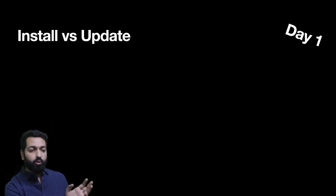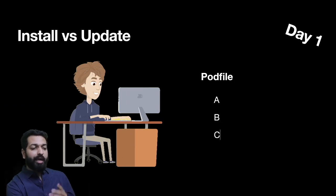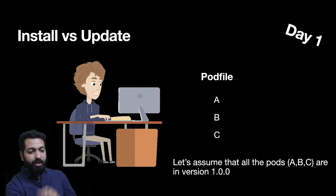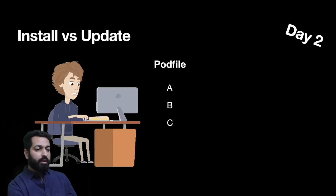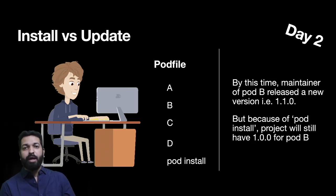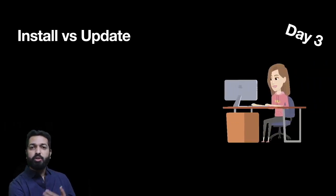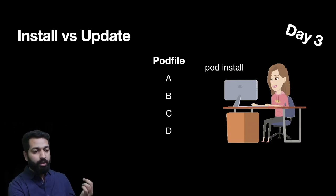Let's understand install versus update through an example. On day one, developer A creates a Podfile with pods A, B, and C and runs pod install — all three are on version 1.0.0. Next day he installs a new pod D using pod install. Because he used pod install, pods A, B, and C remain on version 1.0.0 regardless of the fact that version 1.1.0 is now available for pod B. On day three a new developer joins, clones the project, and runs pod install. Because Podfile.lock was pushed to source control, she gets pods A, B, C, and D all on version 1.0.0.